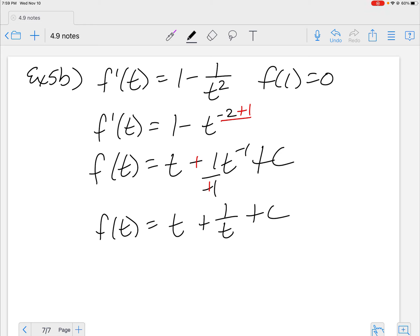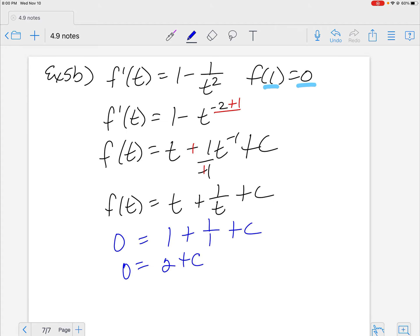So clean it up a little bit. This is negative divided by negative is a positive, so we can rewrite this here as f of t is equal to t plus 1 over t plus C. Now I've got to solve for that C. Luckily, we have an x and a y, so plug that in.